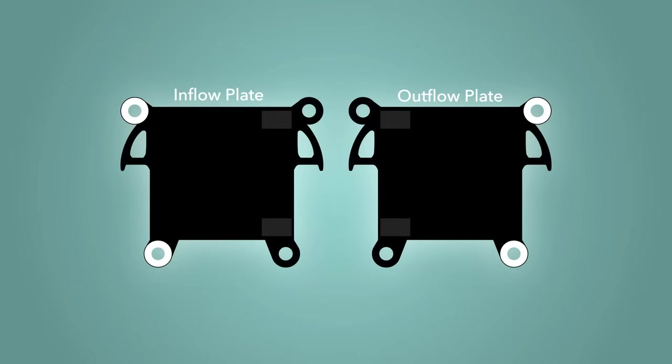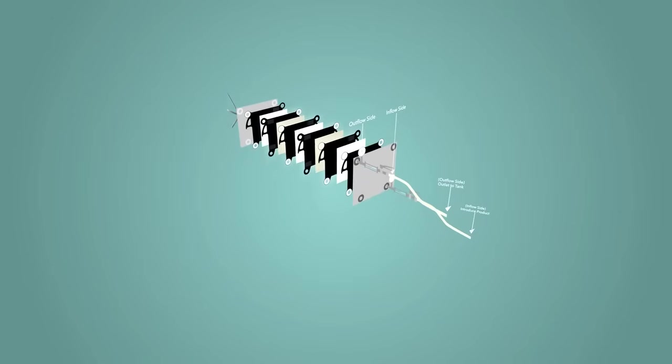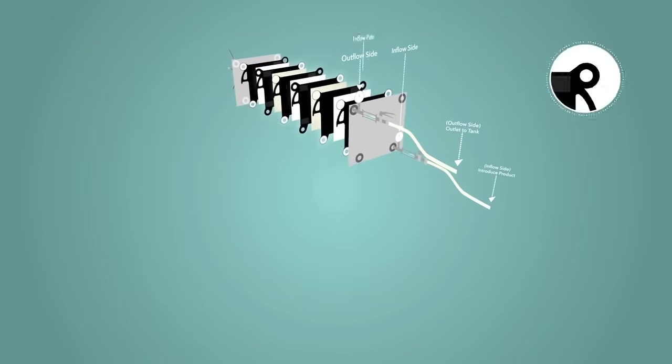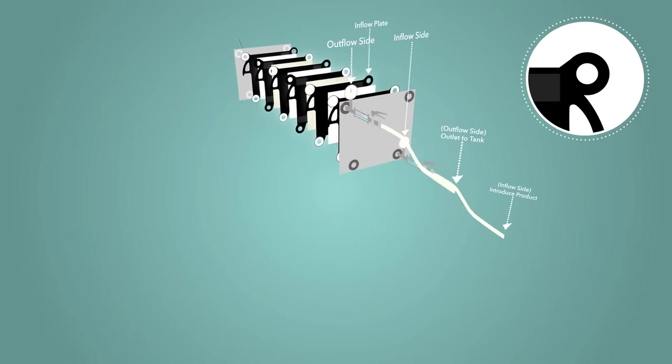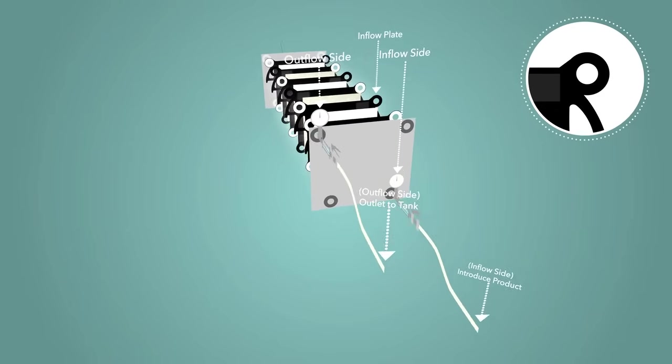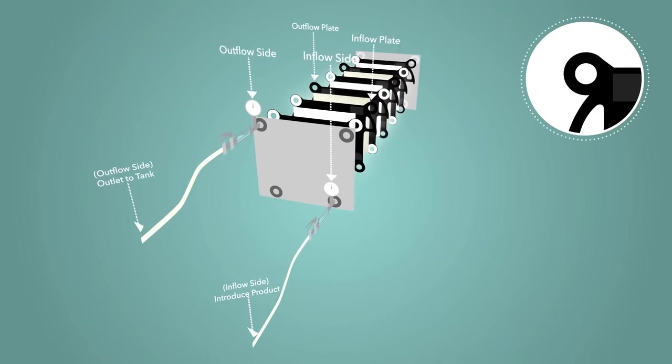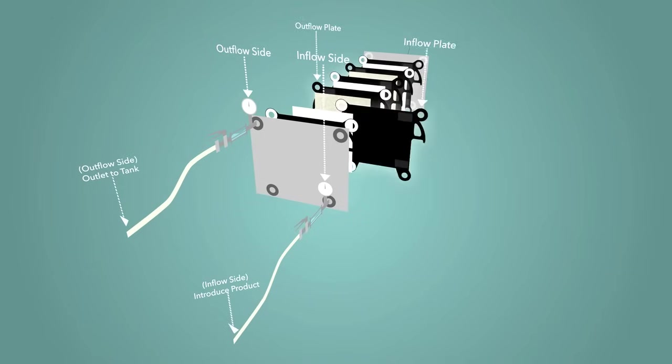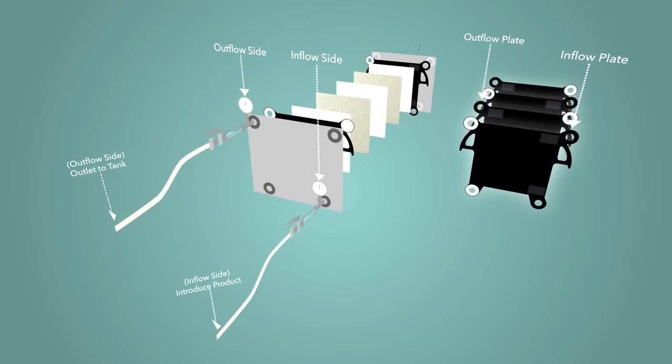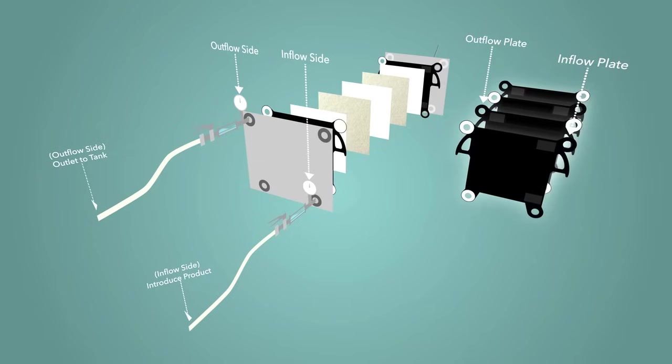All intermediate filter plates are equal, but are defined as either inflow plates or outflow plates based on their orientation in the unit. If the ear of the plate without the gasket is oriented on the inflow side of the machine, this plate is considered an inflow plate. If the ear without a gasket is on the outflow side, this is considered to be an outflow plate. When inserting intermediate plates into the filter, alternate directions so that the plates properly gasket against each other.